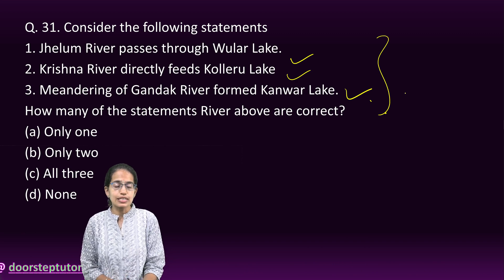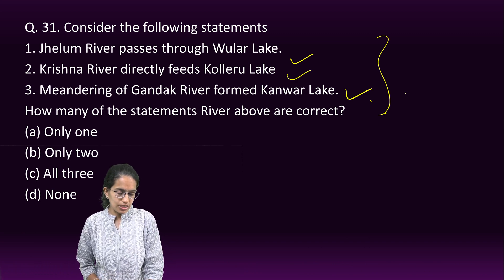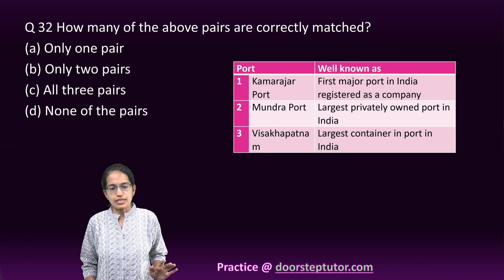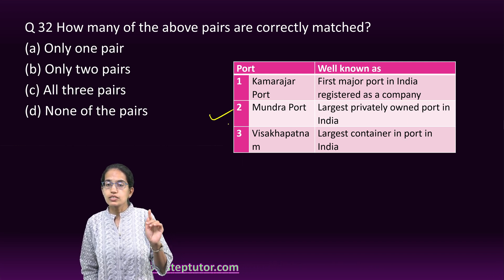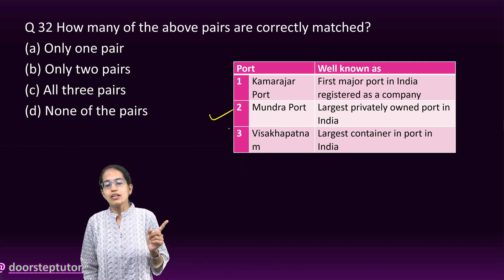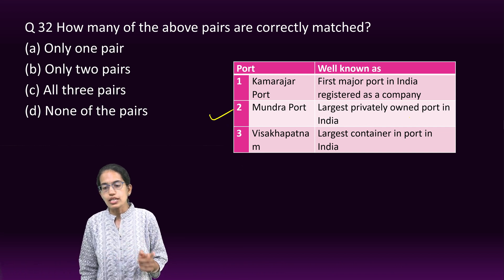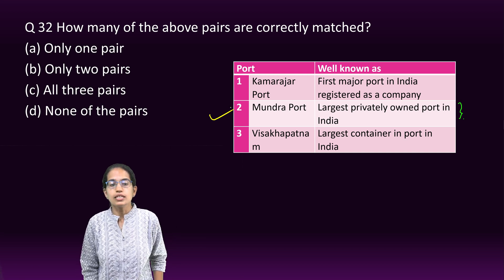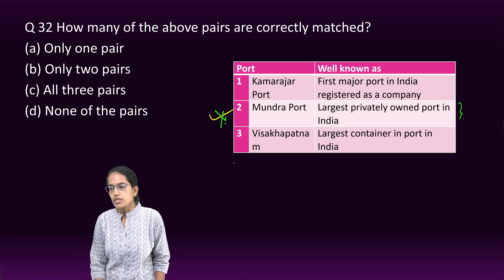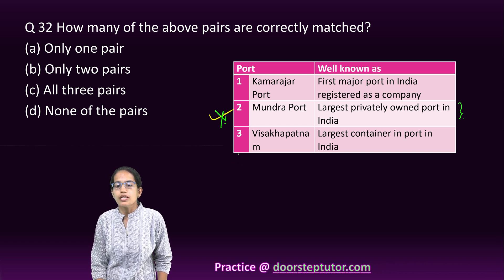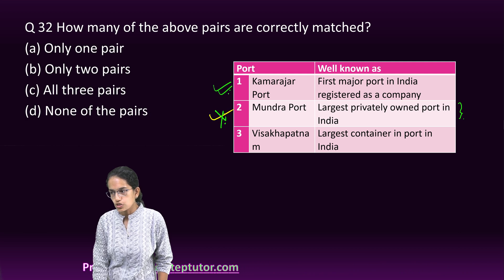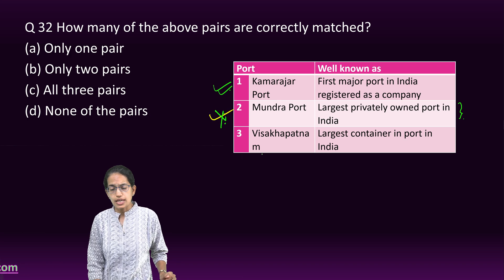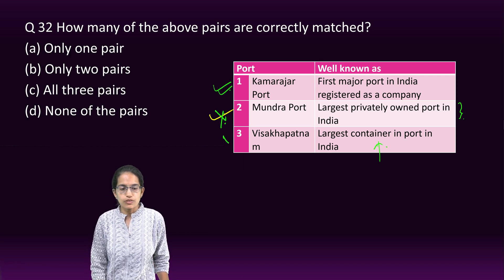If you've covered your NCERT Indian Geography carefully, these questions can be answered directly. On the ports question: Mundra is India's first private port and one of the largest container ports, but not the largest privately owned port in the container category. Kamarajar Port is the first major port registered as a company — it is the 12th major port and is corporatized. The largest container port is Nhava Sheva in Mumbai. So only one pair is correct.